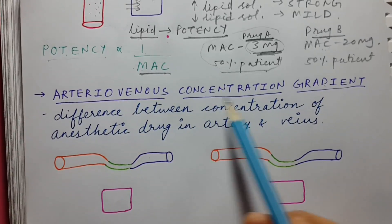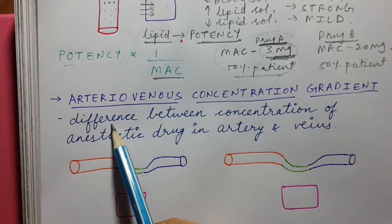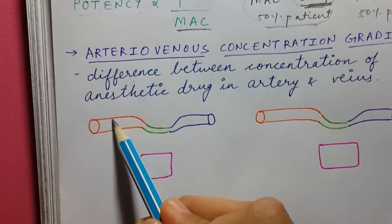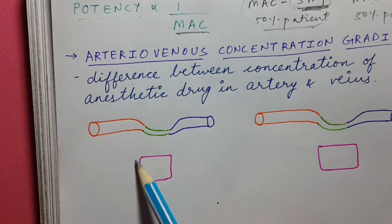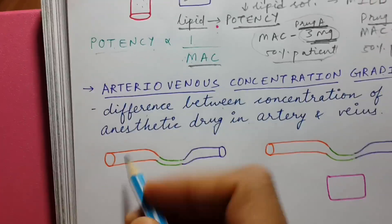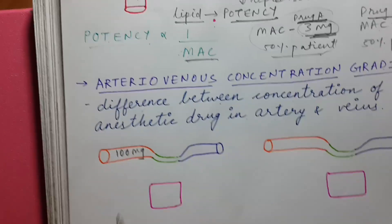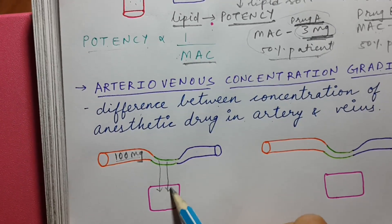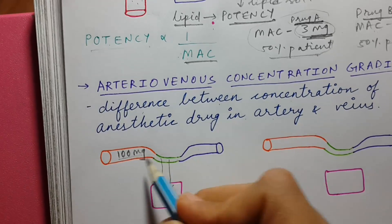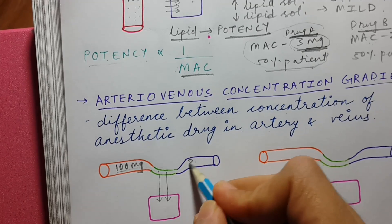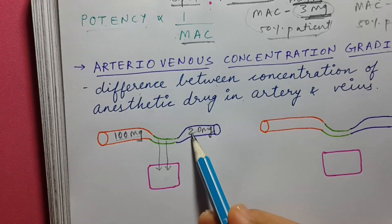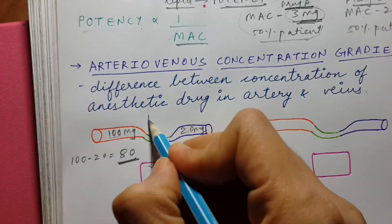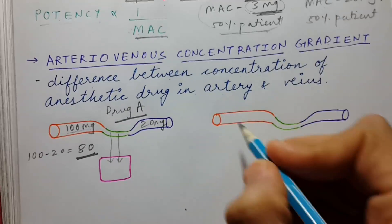The next property is the arteriovenous concentration gradient, which is the difference between the concentration of the anesthetic drug in the artery and the vein. For example, if the concentration of anesthetic on the arterial side is 100 mg, and the tissue takes up some of it through the capillary, leaving 20 mg in the vein, then the arteriovenous concentration gradient is 100 minus 20, which equals 80.